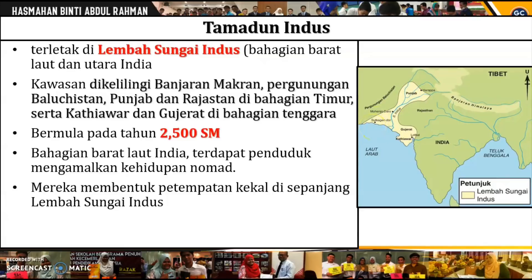Kawasan lembah Sungai Indus dikelilingi oleh Banjaran Makran, Pergunungan Baluchistan, Punjab dan Rajasthan di bahagian timur, serta Kathiawar dan Gujarat di bahagian tenggara. Tamadun Indus bermula pada tahun 2500 sebelum Masihi. Di bahagian barat laut India, terdapat penduduk yang mengamalkan kehidupan nomad. Kemudian mereka membentuk pertempatan kekal di sepanjang lembah Sungai Indus kerana mudah mendapat sumber air dan menjalankan aktiviti pertanian.